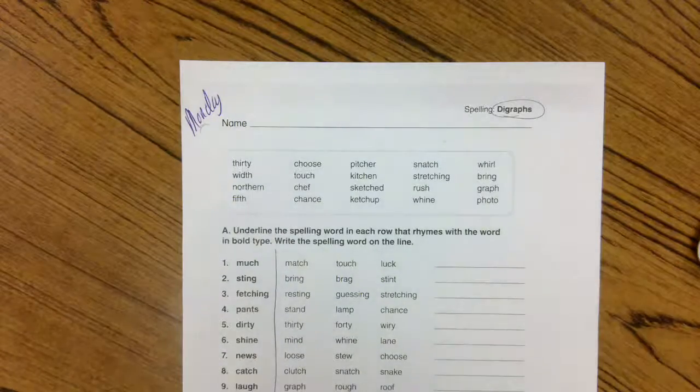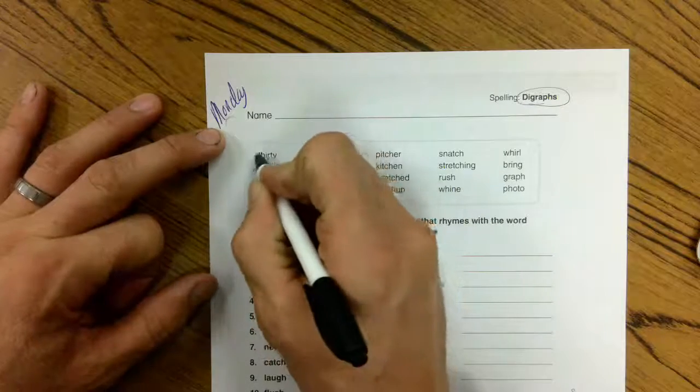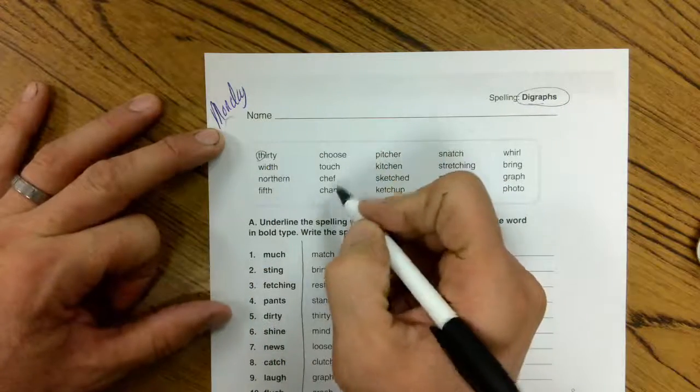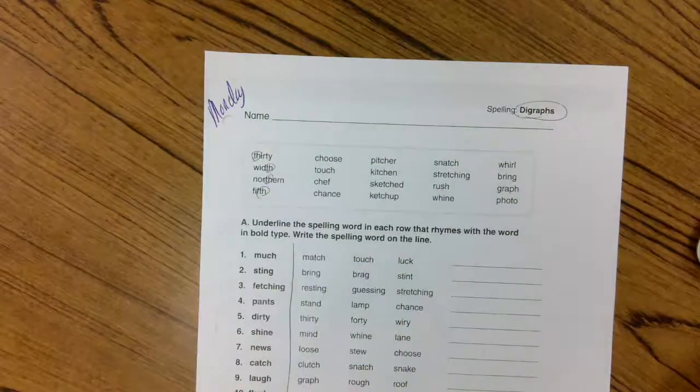Now, what's a digraph? A digraph is when two letters go together to make a different sound. So here you've got the th in these first words. This th says th.